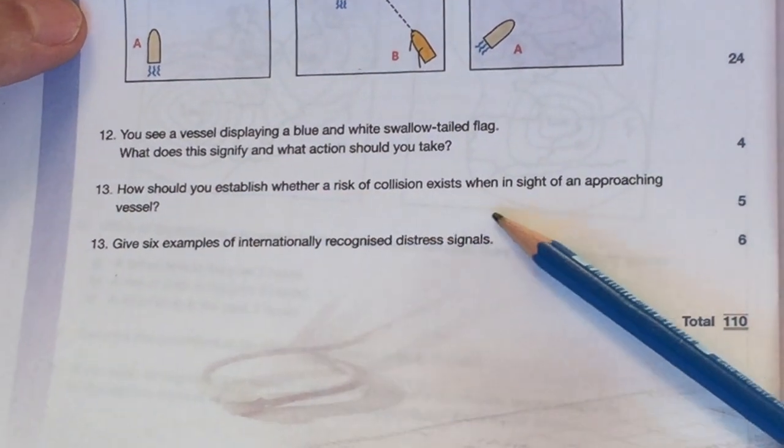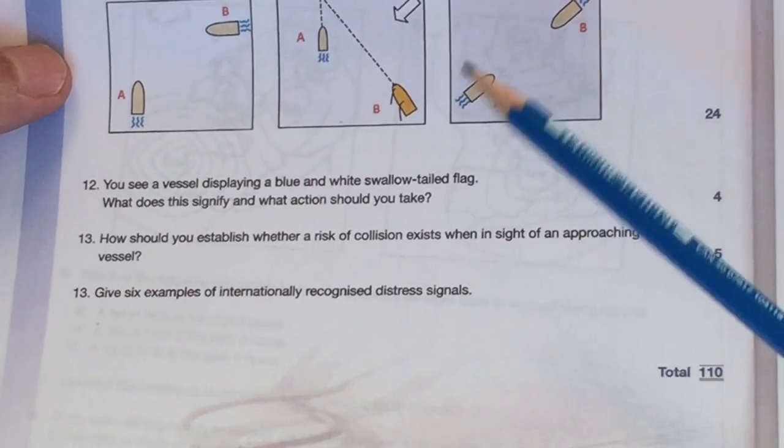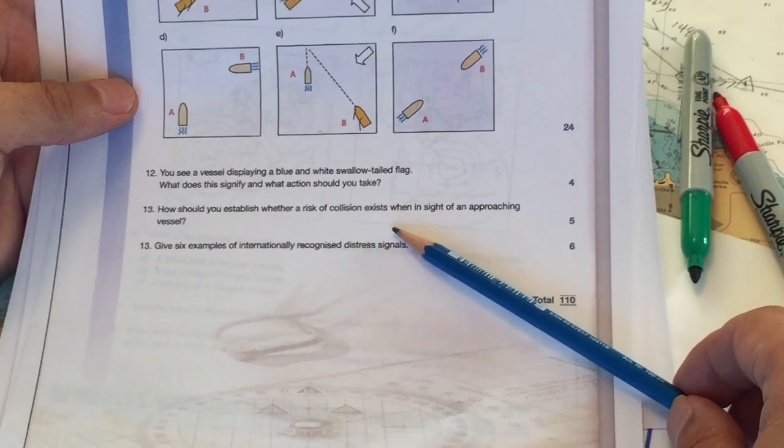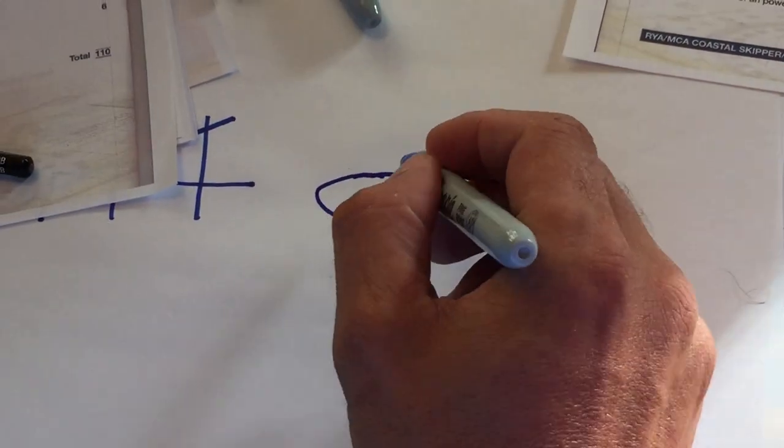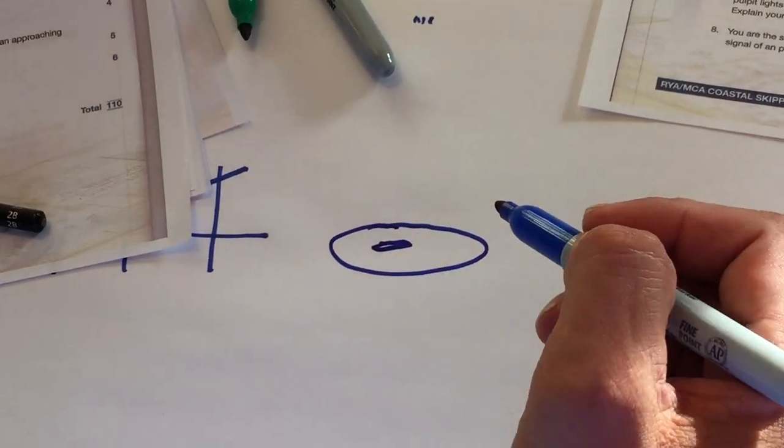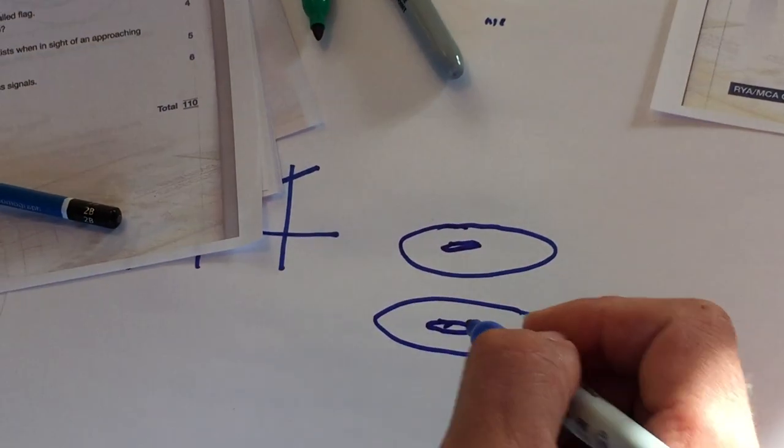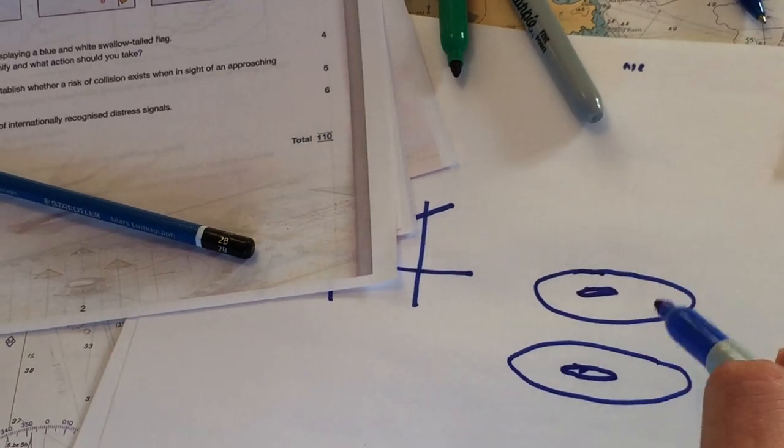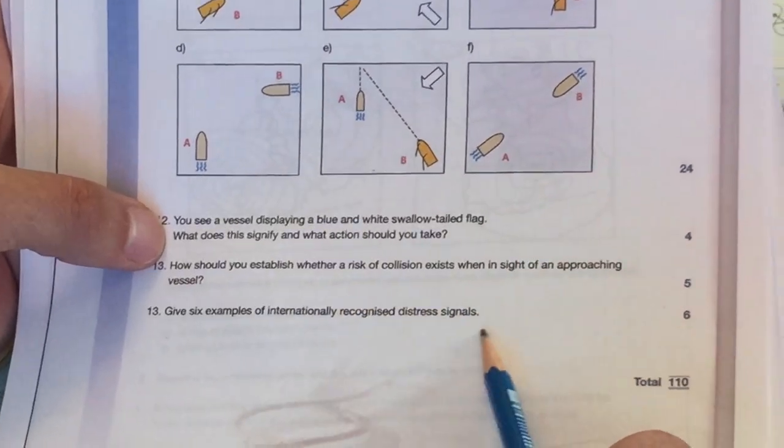How should you establish whether a risk of collision exists in sight of an approaching vessel? You would take bearings on the other vessel. If the bearings, say after every three minutes, if the bearings don't change, then it means there is a risk of collision. Okay, so that means, let's say this is your window, you're down below, you're looking out, and you see a boat here, right? Okay, if five minutes later, you look out the window, and the boat is still there, except it's a little bigger, and so on, it means that it's going to hit you right in your window, right? So, you want to do some kind of a course alteration to change the bearing.